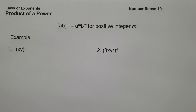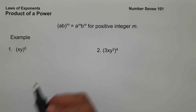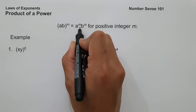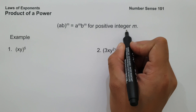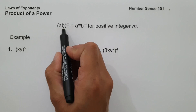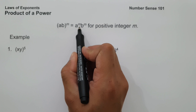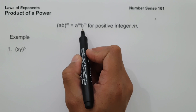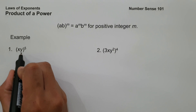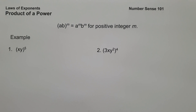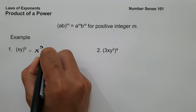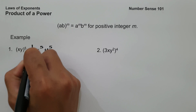Next, we have product of a power. When we say product of a power, if we have base ab raised to exponent m, it will give us a raised to m times b raised to m for positive integer m. All you have to do is distribute the exponent. On example number one, we have quantity x, y raised to 5. Distributing the exponent on variables x and y gives us x raised to 5 times y raised to 5. And this will be our answer.